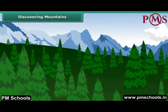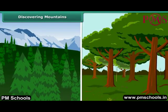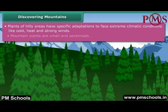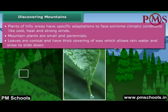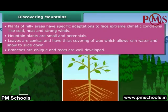Trees growing in hilly regions are different from the trees growing in grasslands or forest regions. Plants of hilly areas have specific adaptations to face extreme climatic conditions like cold and strong winds. Plants are small and perennials. Leaves are conical and have a thick covering of wax, which allows rainwater and snow to slide down. Their branches are oblique and roots are well developed.